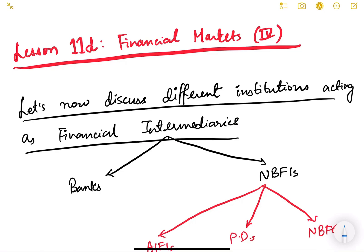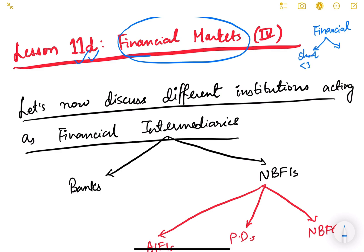Hello friends, let us continue the financial markets topic. This is the fourth lesson of this series, lesson number 11D. Up to now we have studied the meaning of financial markets and the different types depending on duration of borrowing. Short term meaning less than 365 days are known as money markets, and long term meaning more than or equal to 365 days is known as capital markets.